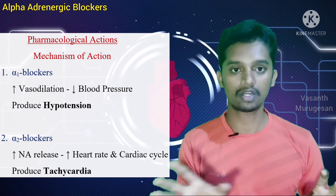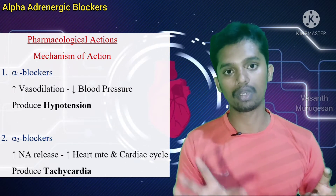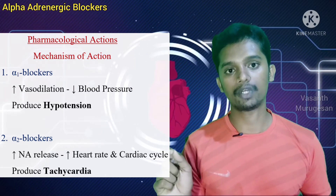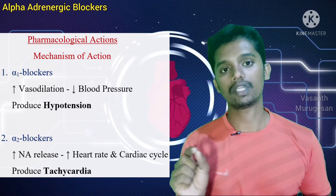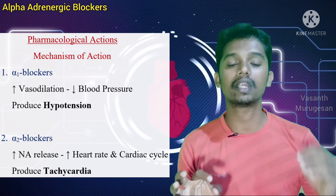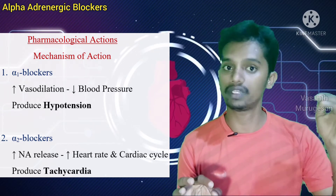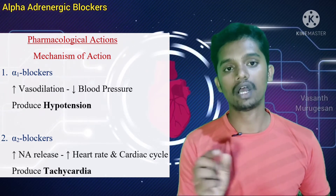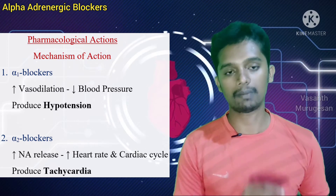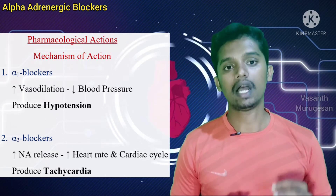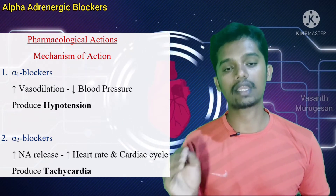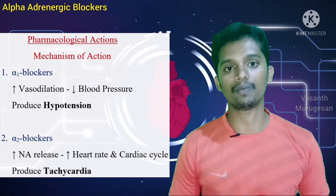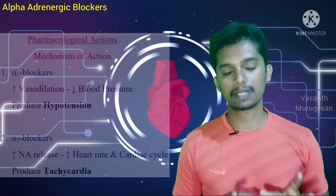For selective Alpha 2 blockers: blood pressure changes but heart rate is increased due to tachycardia. Alpha receptors are also found not only in blood vessels but also in the bladder and prostate.